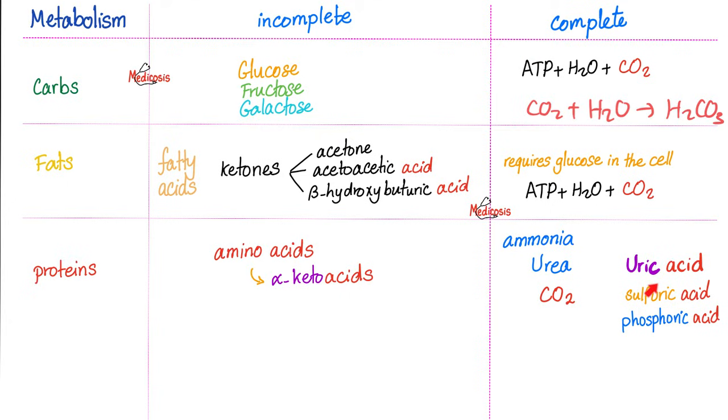In fact, one way to distinguish between a vegan and a meat eater is to look at the pH of their urine. On average, the person who eats meat has a lower urine pH because of all of the acids.